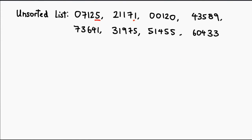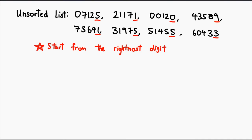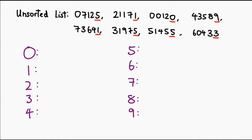The first thing we're going to do is take a look at the rightmost digit of every number in this list. At this point all we want to do is put together the items that have the same underlined number. We can use buckets in an approach similar to bucket sort, so I'm going to do exactly that — going left to right in the original list and bucketing things based on the underlined number.